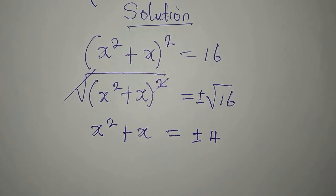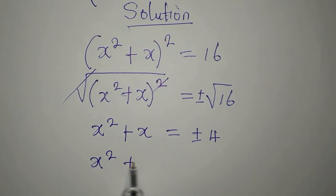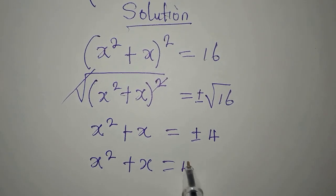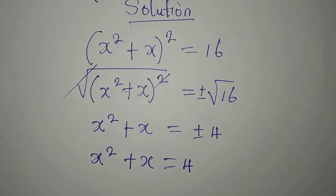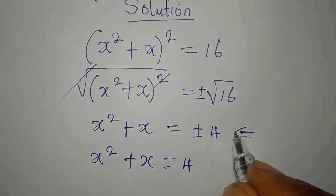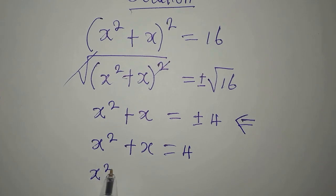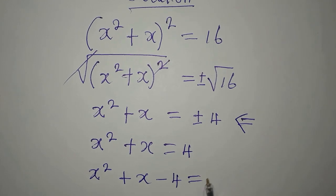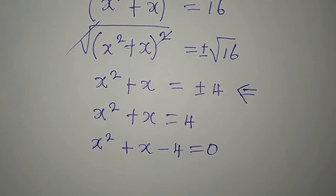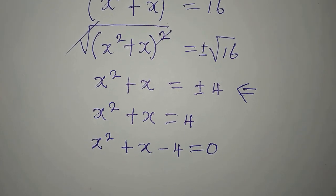So we're going to have two equations. The first is x squared plus x equals 4. And the second will be the negative case. From the first equation, we have x squared plus x minus 4 equals 0 — that is, if you bring 4 to the left and then equate to 0.